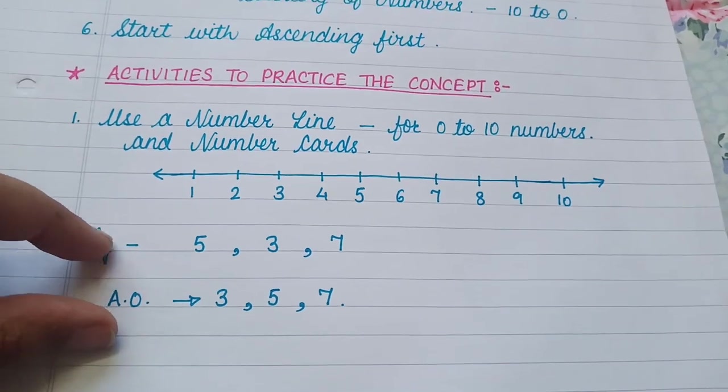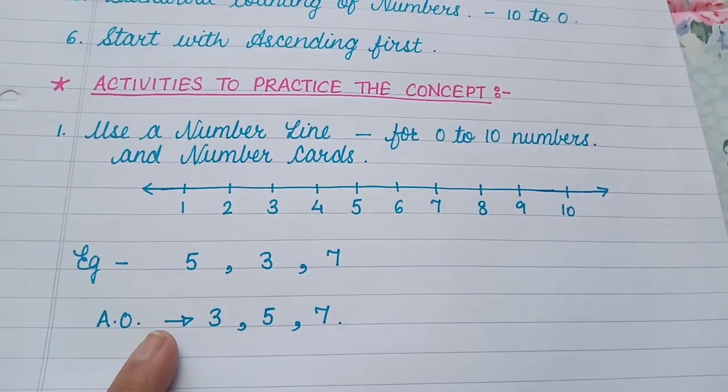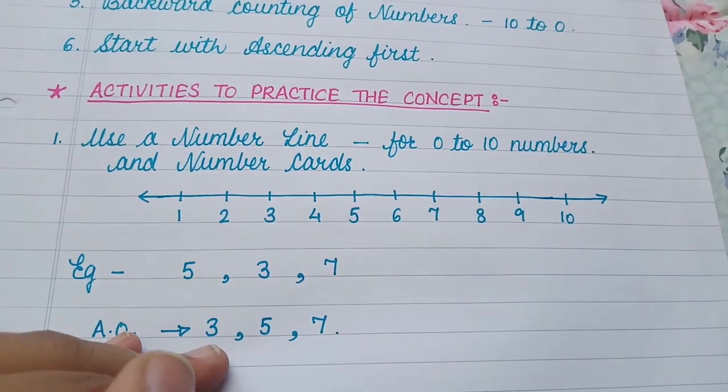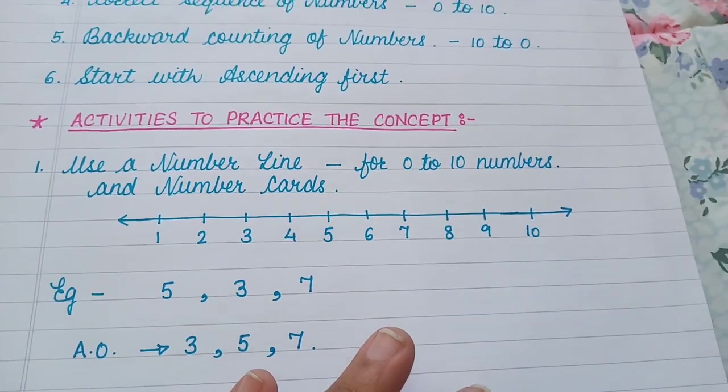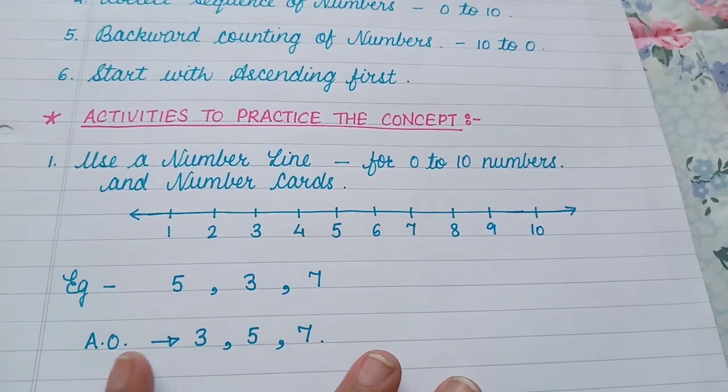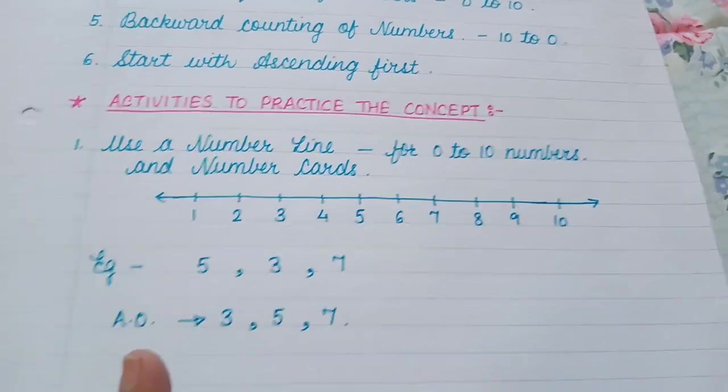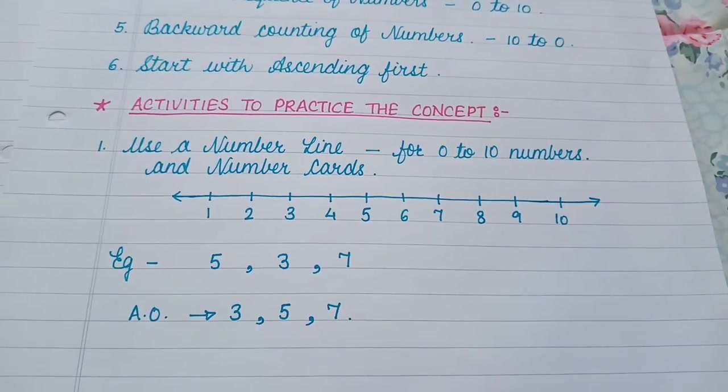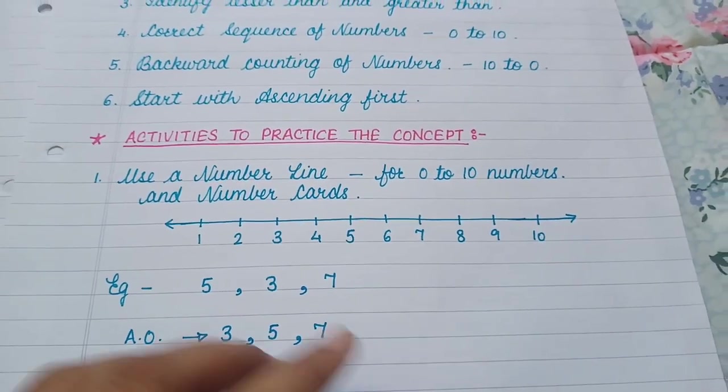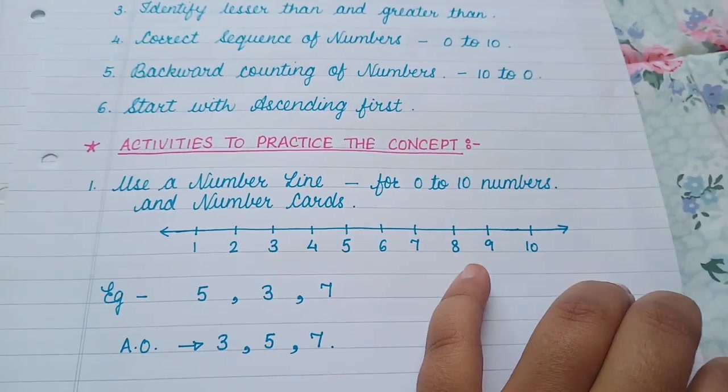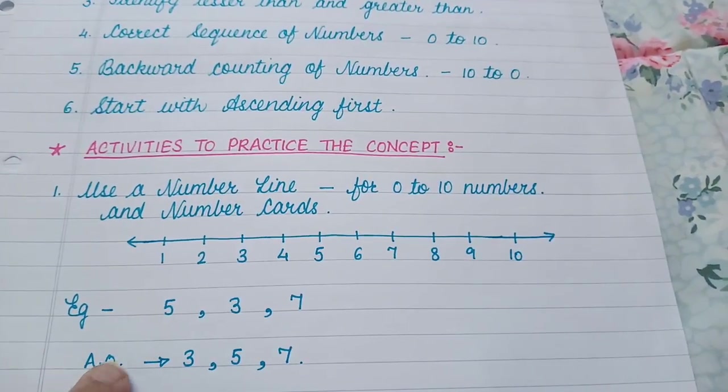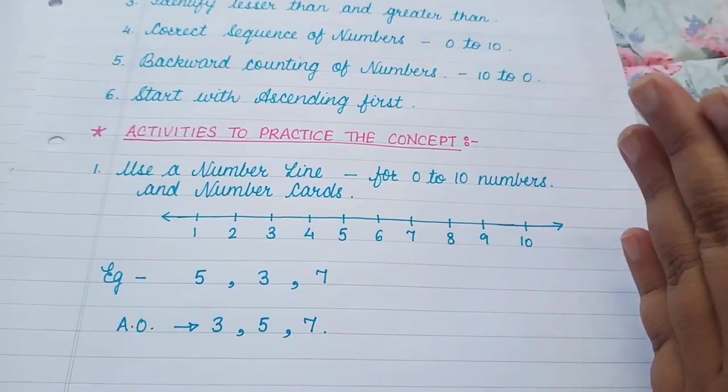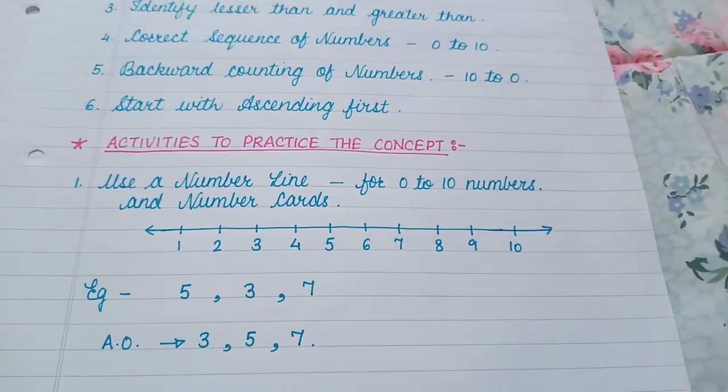Now while teaching, you have to tell that ascending order is the smallest number comes first and the biggest number comes last. And in descending order, the biggest number comes first and the smallest number comes last. So if you are using the number line, tell the child that in ascending order, we go from left to right and in descending order, we go from right to left.